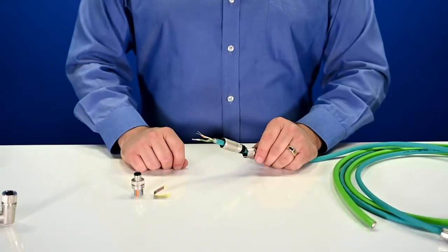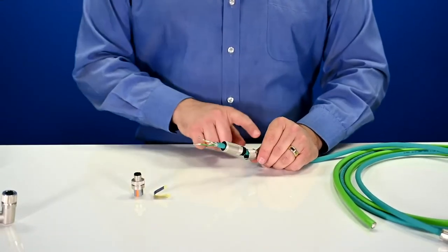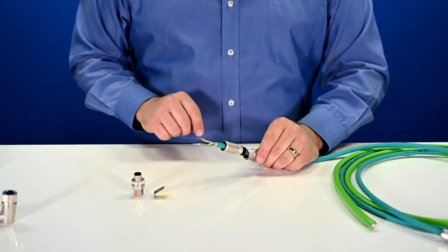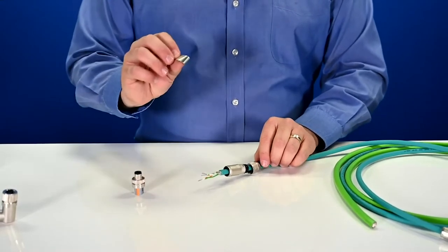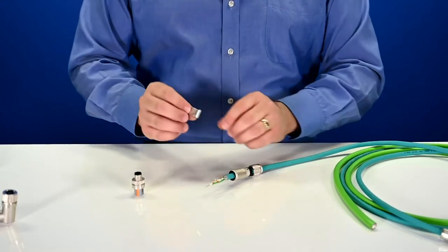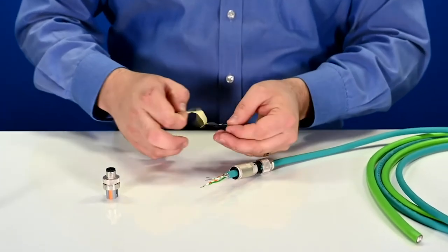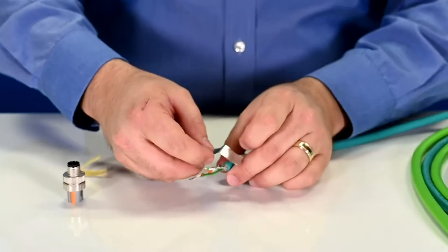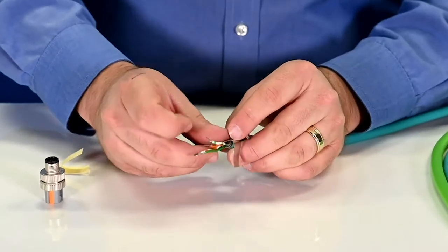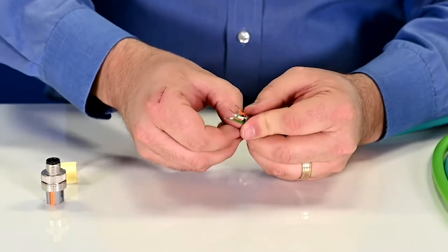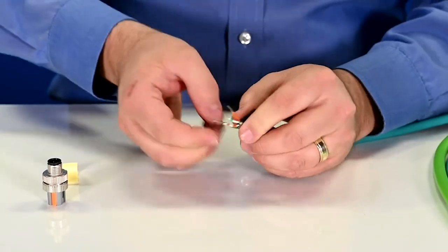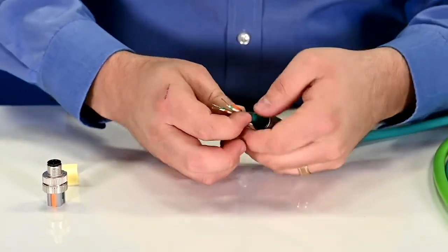Now that we have our cable prepared to terminate, we have our back shell installed on the cable. The next step is to prepare the shield. All of these connectors come with a little strip of metallic tape, and all you have to do is take that tape off of its housing and wrap it around the shield that you have exposed on the cable. This is going to make sure that shield doesn't come unraveled as we tighten down the housing. So we'll go ahead and install that.